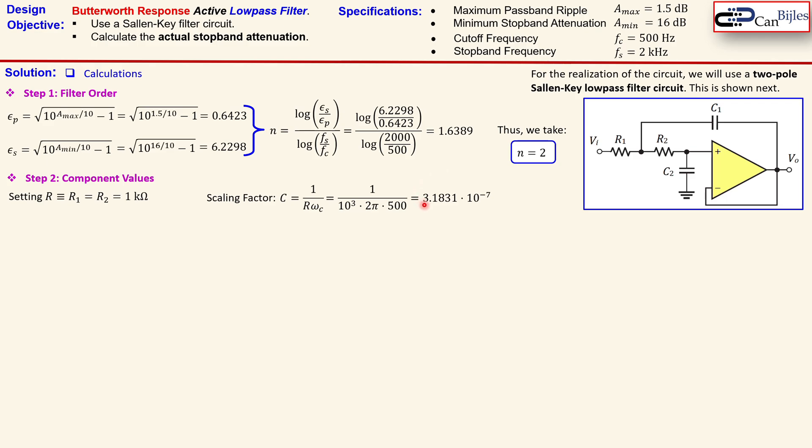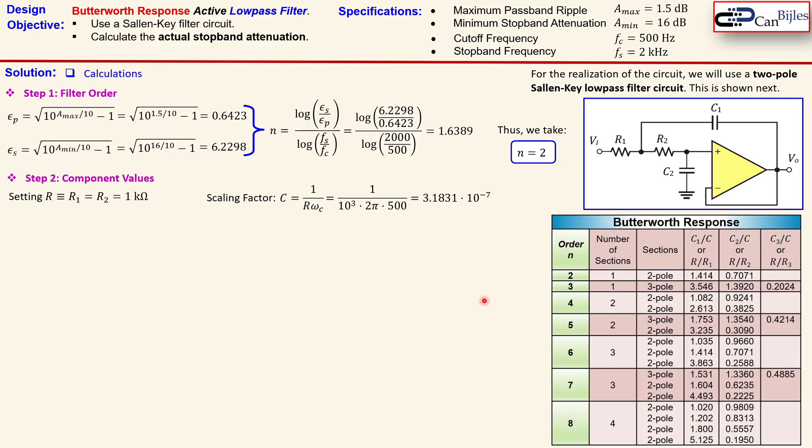And this is a very important parameter or a value we will use now in order to calculate the C1 and the C2. So for that we also need to use the Butterworth response table.